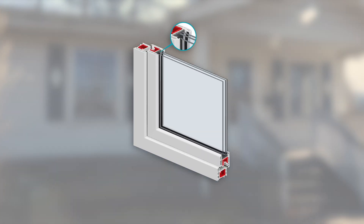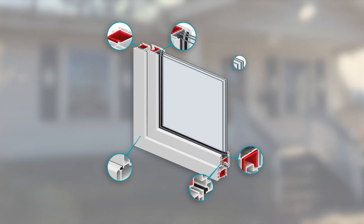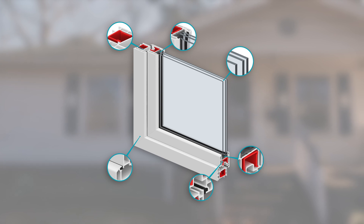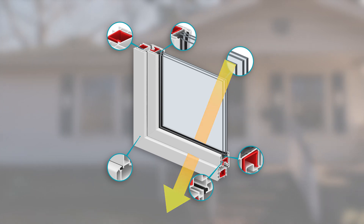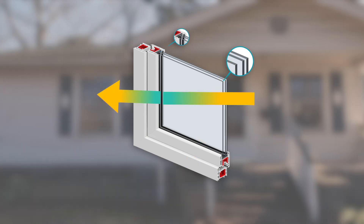It is important to understand how a window reacts with its environment through physics. Windows transfer heat in three ways: conduction, convection, and radiation.